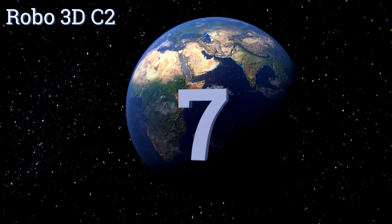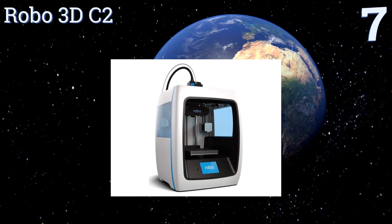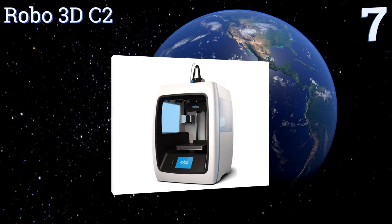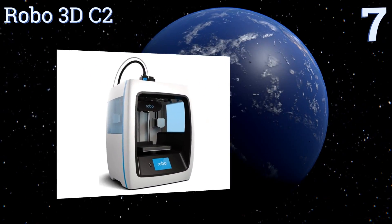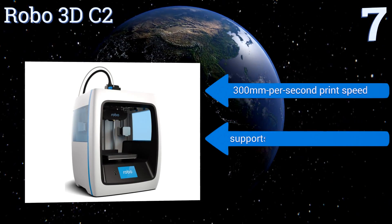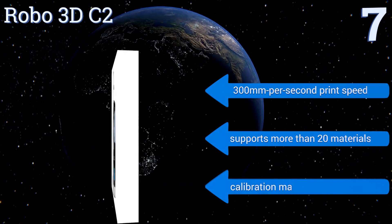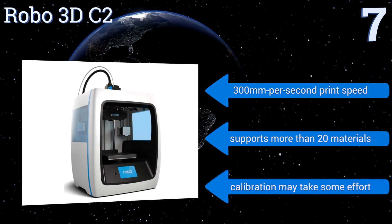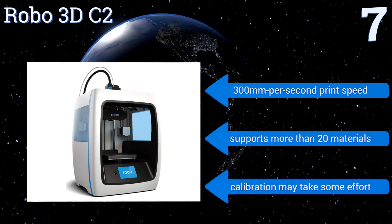At number seven, the compact and portable Robo 3D C2 squeezes a generous build area and advanced features like mobile app integration, a touchscreen interface, and layer resolution as high as 20 microns into a fully enclosed device that fits right on your desktop. It features a 300 millimeter per second print speed and supports more than 20 materials, but calibration may take some effort.